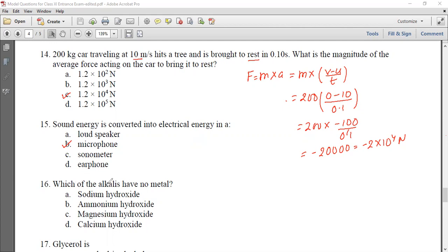Next question, which of the alkalis have no metal? The alkalis are metal salts. Sodium hydroxide, ammonium hydroxide NH4OH. Ammonium hydroxide, NH4OH, has no metal, no electropositive particle. So the correct option is ammonium hydroxide. Magnesium hydroxide contains magnesium, calcium hydroxide contains calcium.